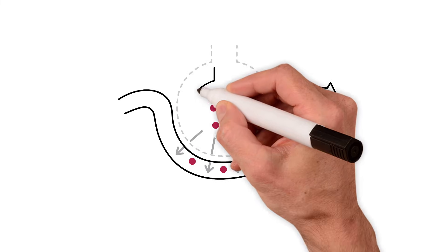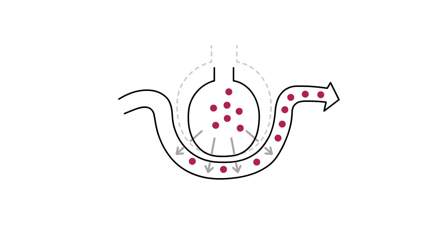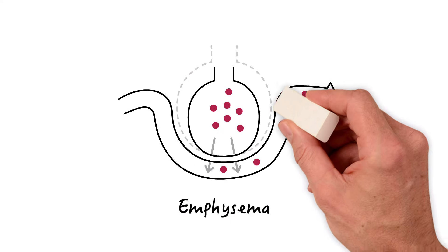Loss of alveolar surface area, as seen in emphysema, will decrease diffusion of oxygen into the lung.